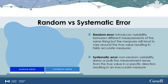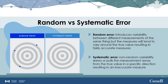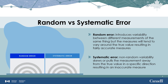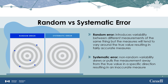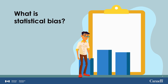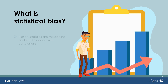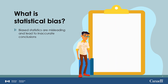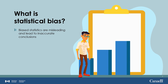On the other hand, systematic errors result in non-random variability that skews or pulls the measurement away from the true value, resulting in a measurement that may be smaller, bigger, higher, or lower than the true value, and can result in incorrect conclusions. Now that we understand the difference between random and systematic errors, from this point on we will refer to such inaccurate conclusions as statistical bias.